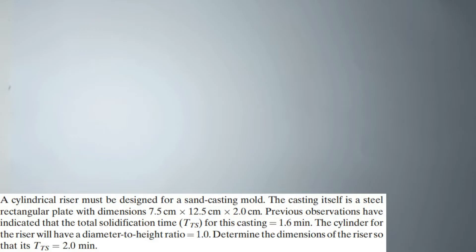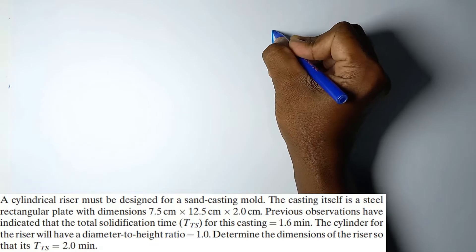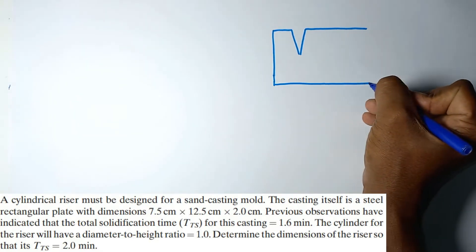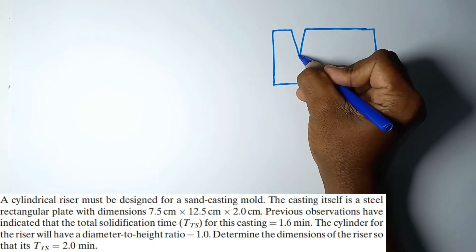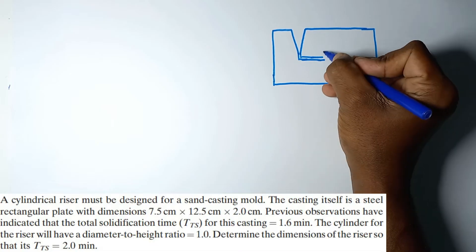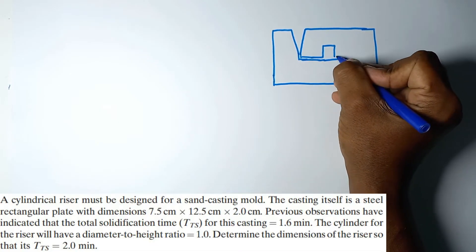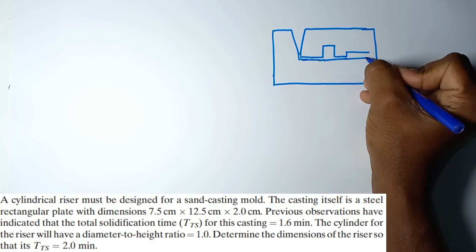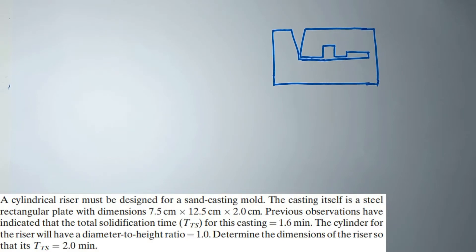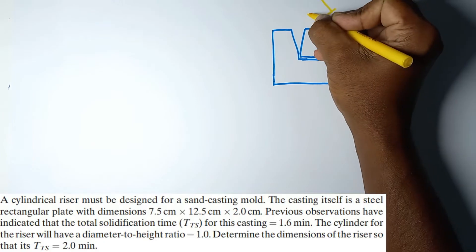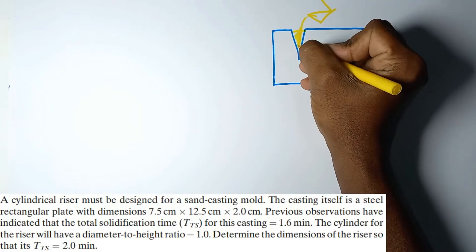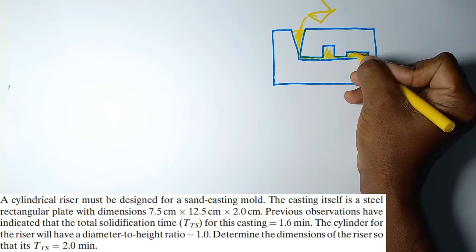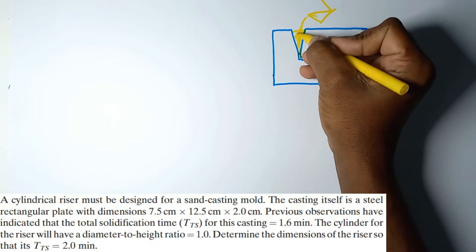Let me figure out the problem first. Let me draw the mold. This is a sprue, this is the main runner, and the cylindrical riser has to be designed. Then the casting is a rectangular shape — it's a plate. When molten metal goes into this sprue due to gravity, it flows to the runner system, then it enters the riser and the casting.